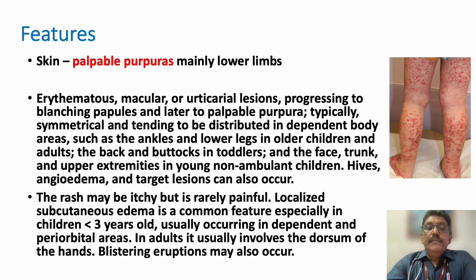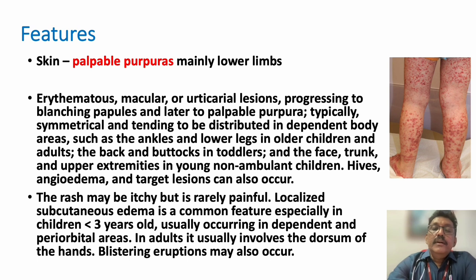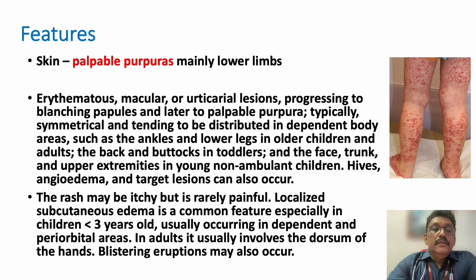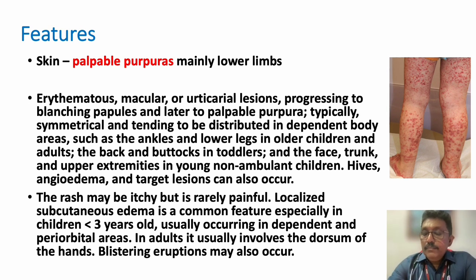The patient can have lower limb palpable purpura mainly in the calf areas. Purpuras can also appear in the gluteal area or thigh area; rarely it extends to the upper part of the body. This is a classical condition where you get palpable purpuras in the lower limb in children.